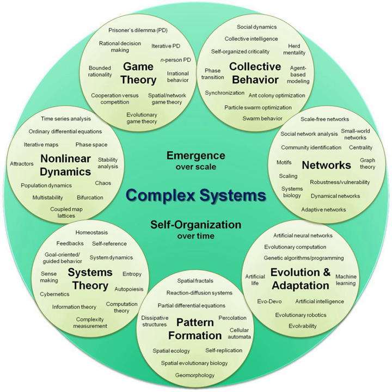Although it is arguable that humans have been studying complex systems for thousands of years, the modern scientific study of complex systems is relatively young in comparison to established fields of science such as physics and chemistry. The history of the scientific study of these systems follows several different research trends. In mathematics, arguably the largest contribution to the study of complex systems was the discovery of chaos in deterministic systems, a feature of certain dynamical systems strongly related to nonlinearity. The study of neural networks was also integral in advancing the mathematics needed to study complex systems. The notion of self-organizing systems is tied with work in nonequilibrium thermodynamics, including that pioneered by chemist and Nobel laureate Ilya Prigogine in his study of dissipative structures.